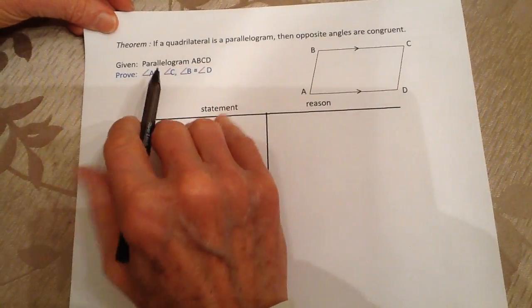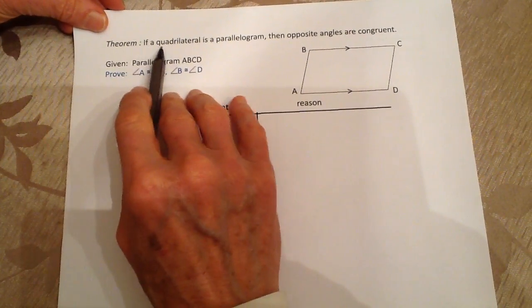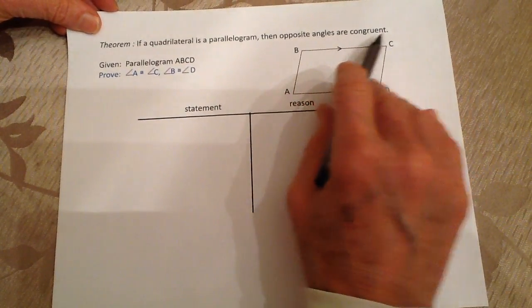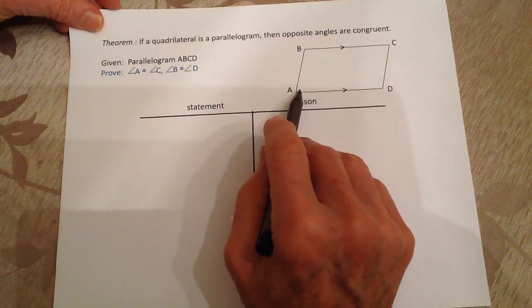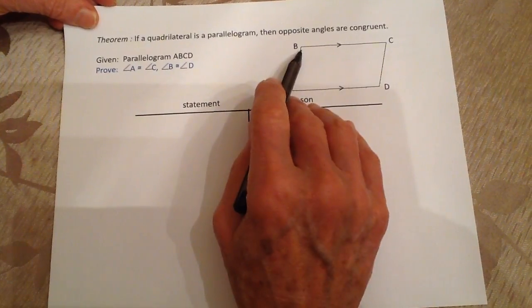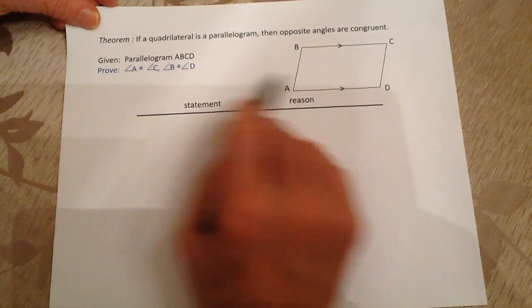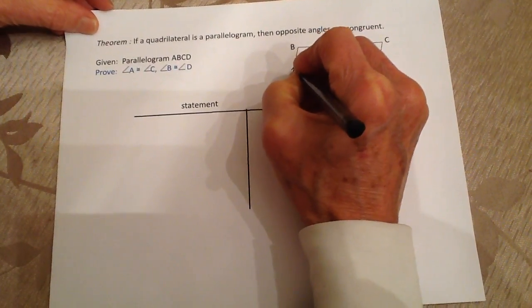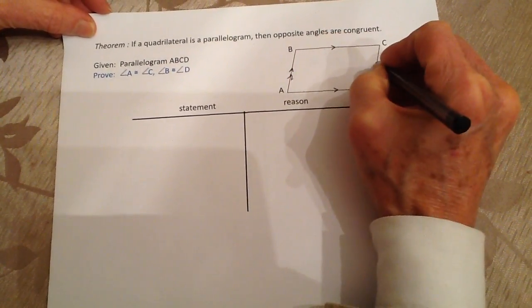We're going to prove the theorem: if a quadrilateral is a parallelogram, then opposite angles are congruent. Opposite angles being A and C, and then B and D. We're given this as a parallelogram, so I'm going to put in here some of the attributes of a parallelogram.